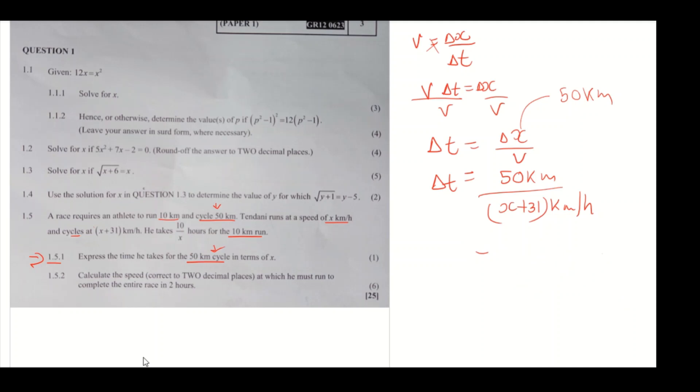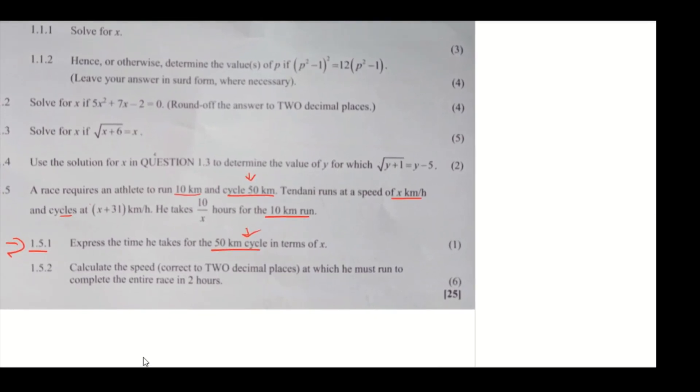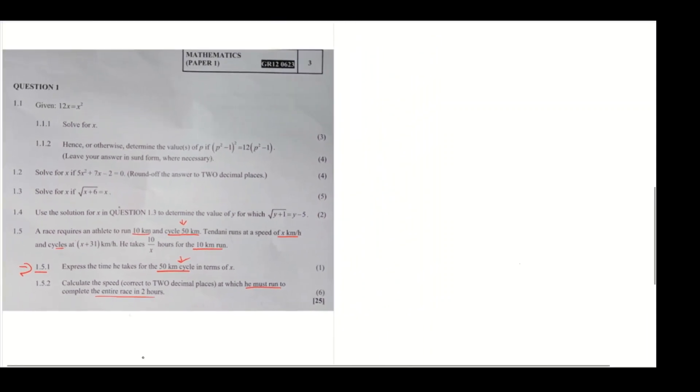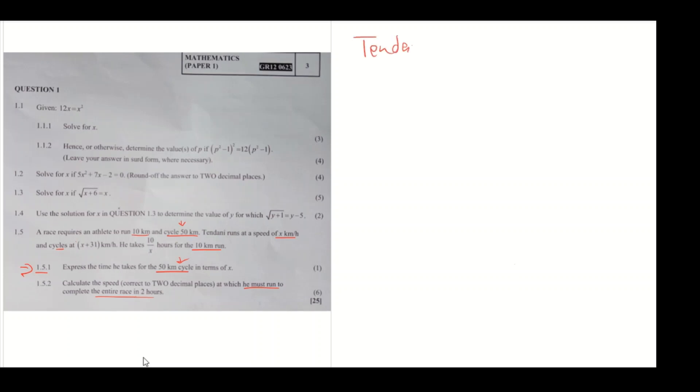Now let's go to 1.5.2 where the question reads: Calculate the speed correct to two decimal places at which he runs, completing the entire race in two hours. We need to use a quadratic formula because they're saying it must be in decimals. This person runs for 10 kilometers and cycles for 50 kilometers.